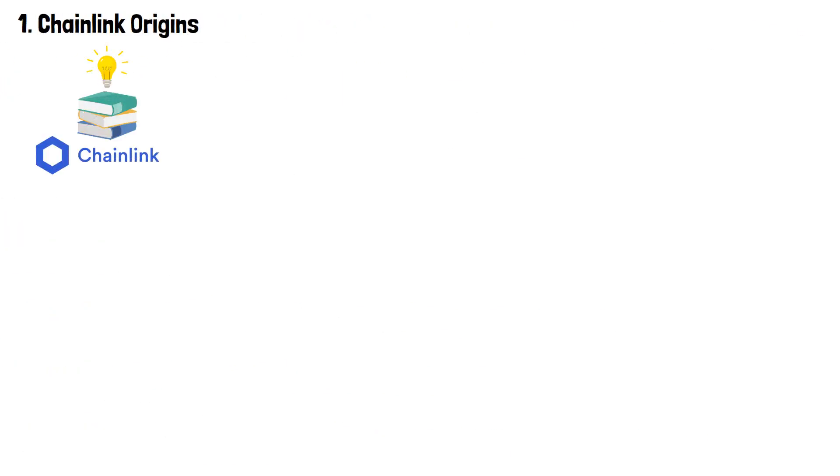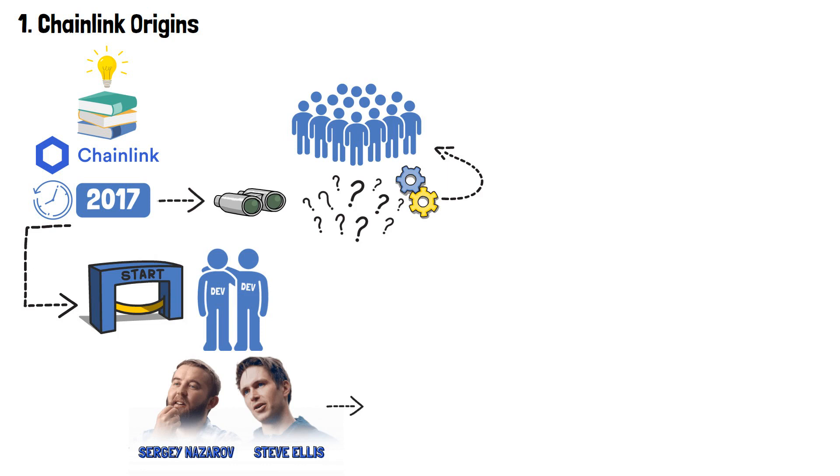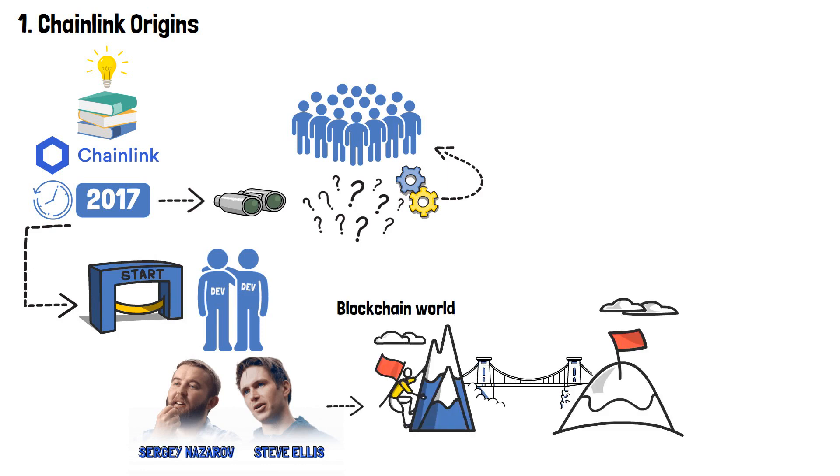To understand what is chainlink in crypto truly, let's rewind the clock back to the year 2017. By doing so, we'll be able to see what were the external circumstances that created a demand for the service that chainlink offers. So, the story begins in 2017. This is when a duo of developers, Sergey Nazarov and Steve Ellis, set out on a mission to bridge the gap between the blockchain world and the seemingly endless and continuously expanding realm of real-world data.